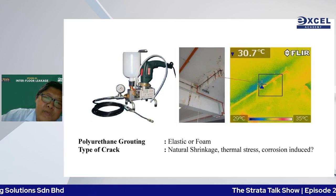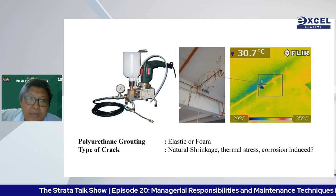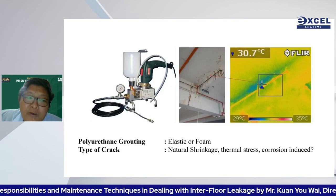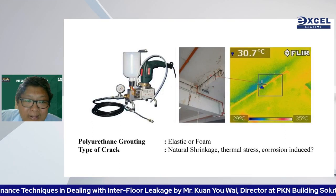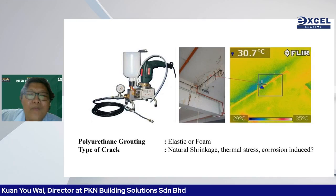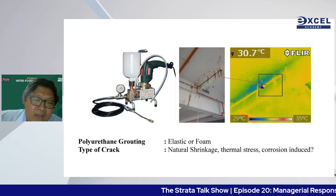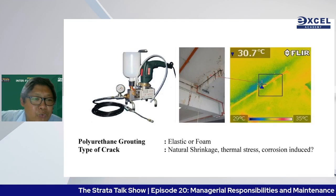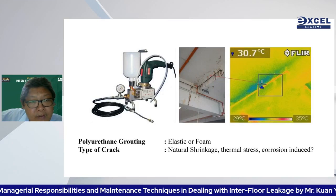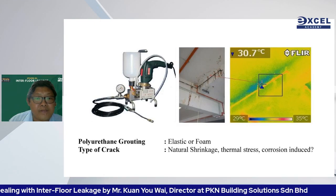PU grouting is widely used but debatable — everyone knows it is not a good solution, yet it remains the cheapest option. Infrared monitoring shows dampness spreads further with PU grouting until it reaches the next cavity and leaks again. That is why waterproofing warranties using PU grouting carry only one to three months coverage. PU grouting is only acceptable if the crack is no longer dynamic and the source has been rectified.